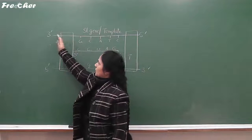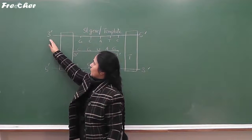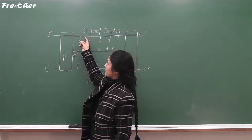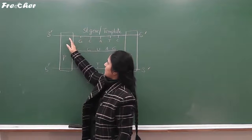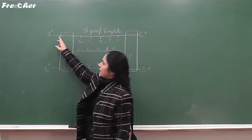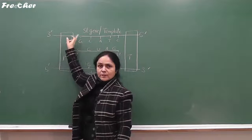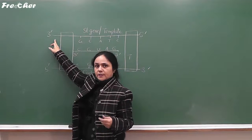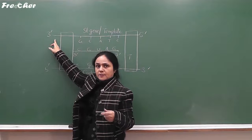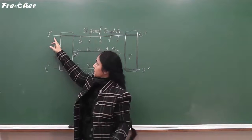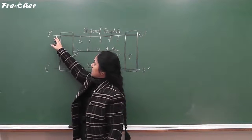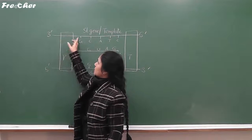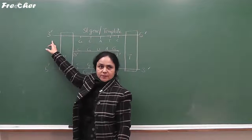Upstream of the promoter — that is, before the promoter — and downstream of the promoter — that is, after the promoter — some additional sequences are present. These additional sequences, which you will study later in the chapter on gene expression and regulation, control gene regulation and gene expression.